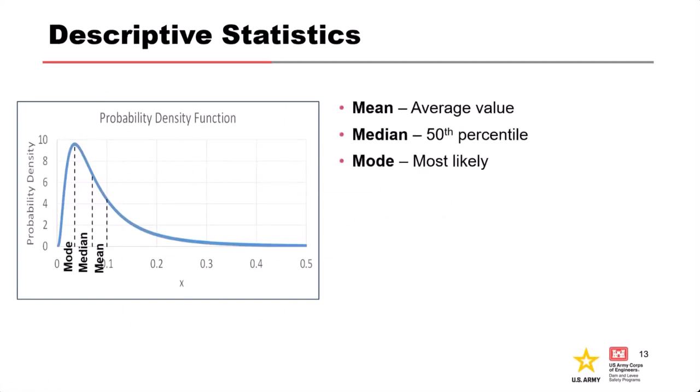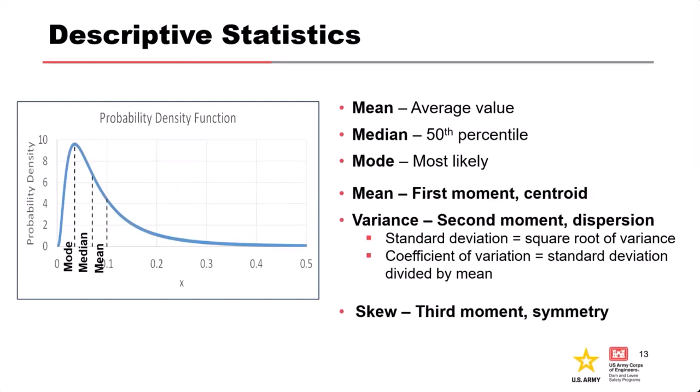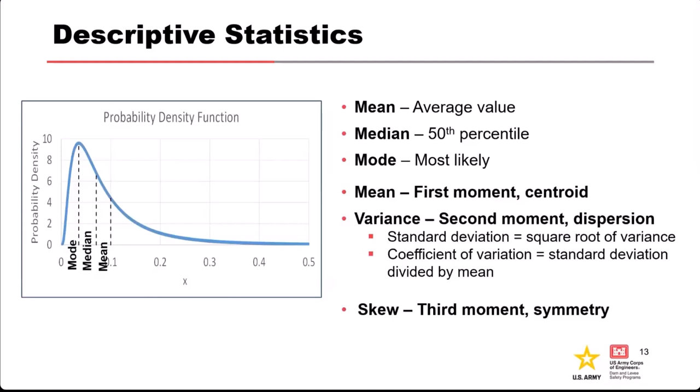Descriptive statistics like mean, median, and mode can describe these distributions. Mean is the centroid — the center of mass of the shape. Variance is dispersion, analogous to the moment of inertia, and is the second moment. Skew relates to symmetry — for example, a distribution with a long tail to the right has a high positive skew. These statistics can often be related to the location, scale, and shape parameters of parametric distributions.